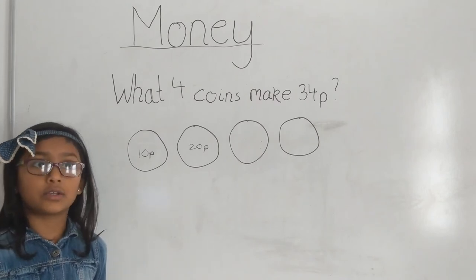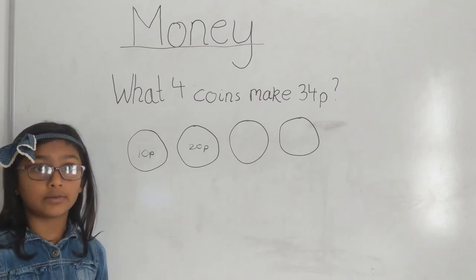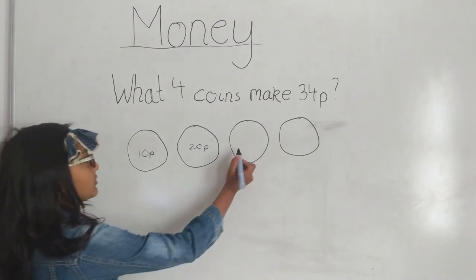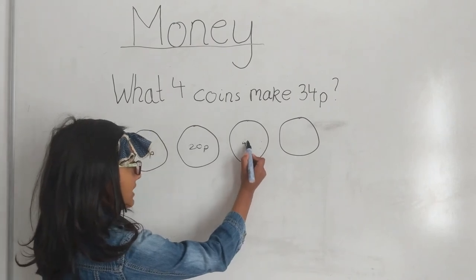1 add 1 equals 2, 1 add 2 equals 3, 2 add 2 equals 4. So we're not going to write 4p, no.